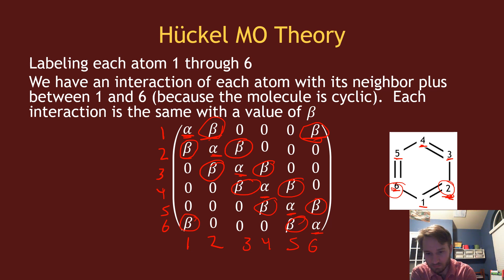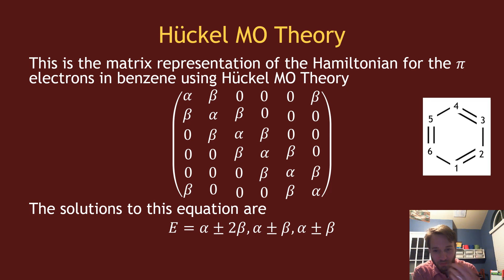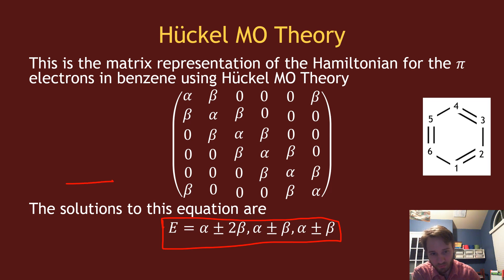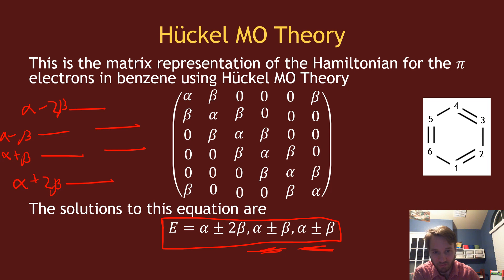When you solve this matrix using Huckel MO theory, you get the following solutions: a set of orbitals with different energies. For benzene, the energy levels are alpha plus two beta, alpha minus two beta, alpha plus beta, and alpha minus beta. The alpha plus beta and alpha minus beta levels are each doubly degenerate. That is the MO diagram according to Huckel MO theory for benzene.